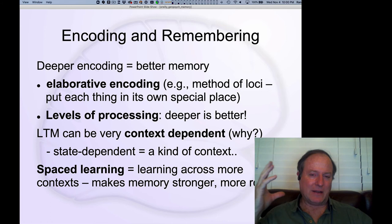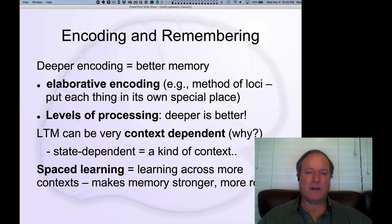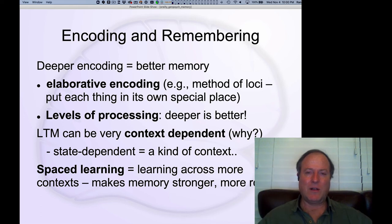They found a significant difference: if you learned the material underwater, you performed better when tested underwater, and likewise for the beach. Crossing over was worse in either direction. That context effect — the surrounding material, which was very different in those two conditions — really makes an impact. It's similar to the method of loci: different spatial features encoded incidentally along with the items you're trying to learn.